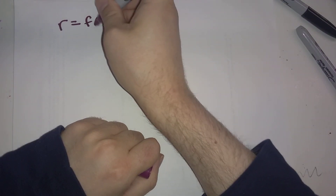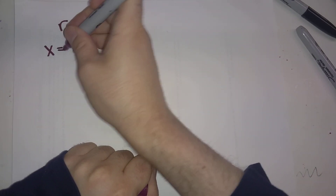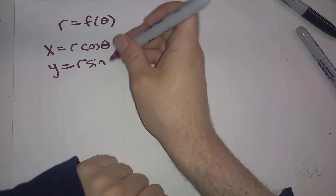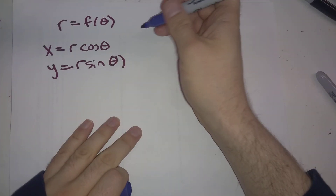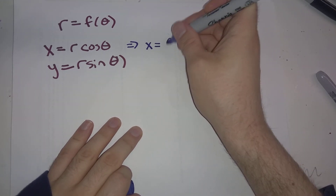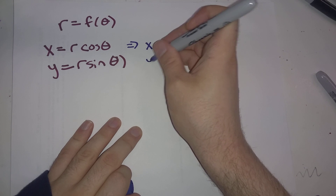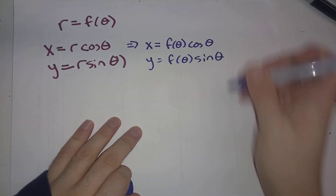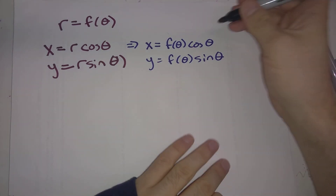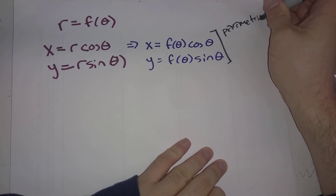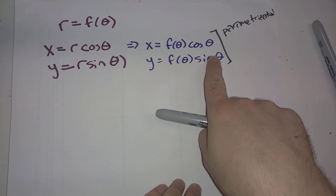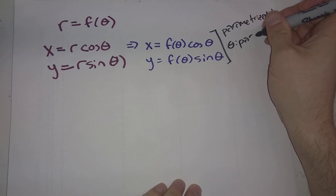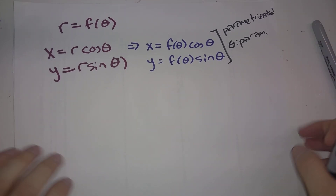If we have r = f(θ), then x = r·cos θ and y = r·sin θ. We can replace r with f(θ), giving us x = f(θ)·cos θ and y = f(θ)·sin θ. The key thing to realize is that at this point, this is a parametrization — x and y are written parametrically, with theta as the parameter.